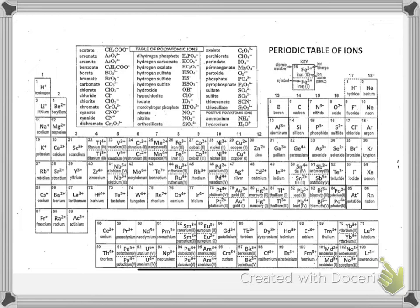So we know the tall columns, those are the representative elements. And those are the ones that are the main group. Representative and main group are the same. These are the elements that we can predict the charge of with the octet rule. And we did spend some time understanding that group 1a forms a 1 plus, 2a forms a 2 plus. And if you look down these columns, you see that there's just one.